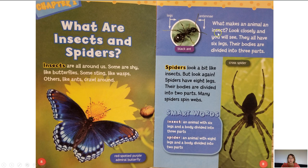What makes an animal an insect? Look closely and you will see. They all have 6 legs and their bodies are divided into 3 parts. Spiders look a bit like insects, but look again — spiders have 8 legs and their bodies are divided into 2 parts.